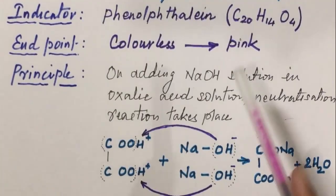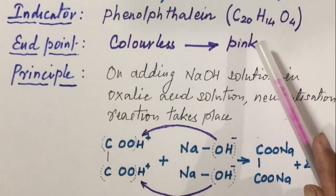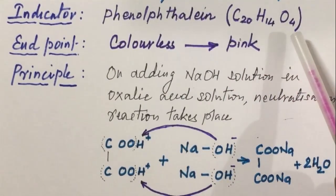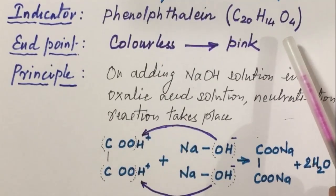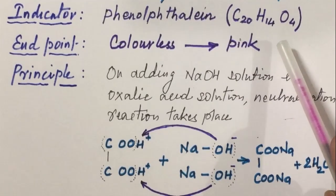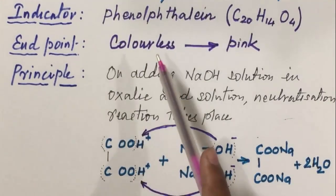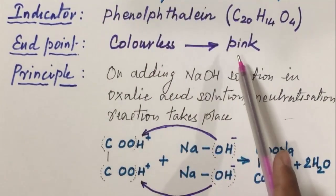In this titration we are using phenolphthalein as an indicator whose molecular formula is C20H14O4. In this titration, NaOH is a strong base and oxalic acid is a weak acid. When we are using these pairs, phenolphthalein is always used as an indicator. The completion of the reaction is detected by some physical change produced by the indicator as end point. The end point is a point where solution changes from colorless to pink color.